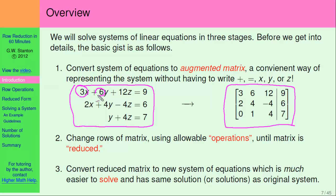so 3, 6, 12, 9, and we just put them into a matrix, 3, 6, 12, 9. It's as simple as that.